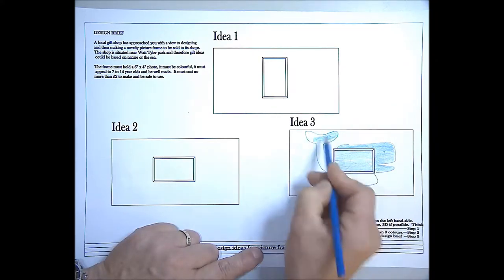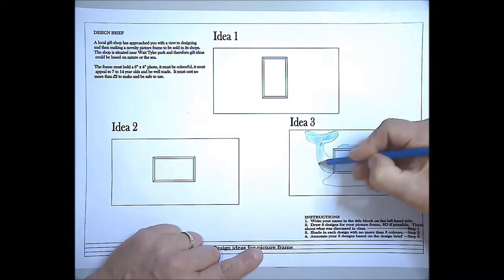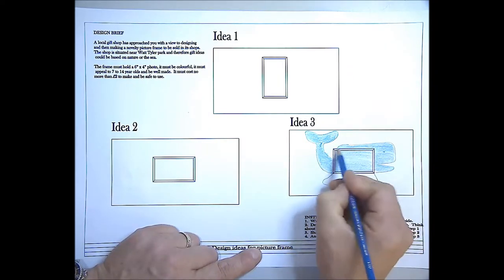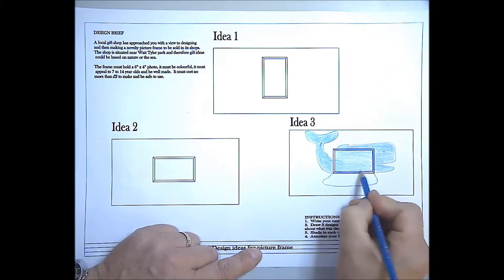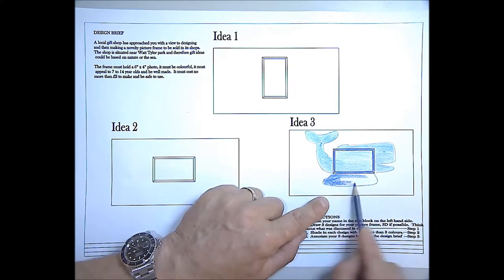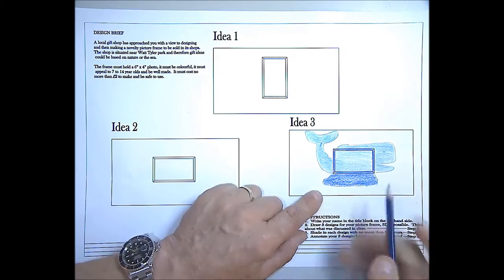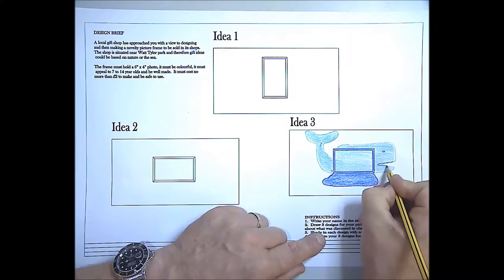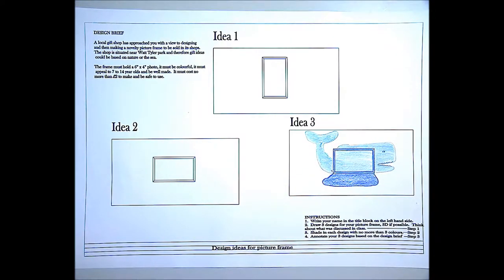Try and keep the shading going all the same way wherever possible. Obviously it's not always possible, but where it is, try and keep it all going the same way. We're going to use a slightly thicker round the frame and then the base is going to be a slightly darker blue, which we're just going to outline there like that. Add a few features, eye and some teeth.